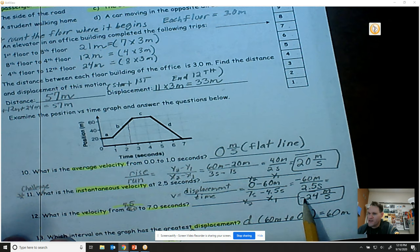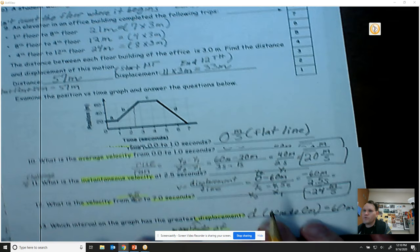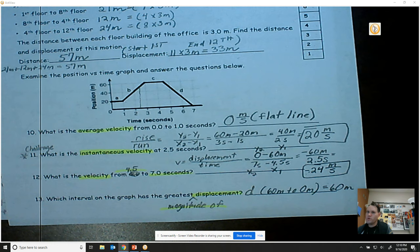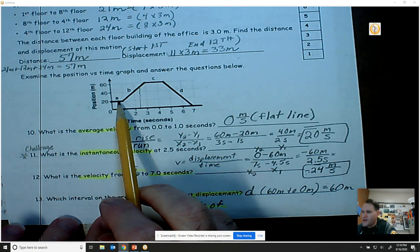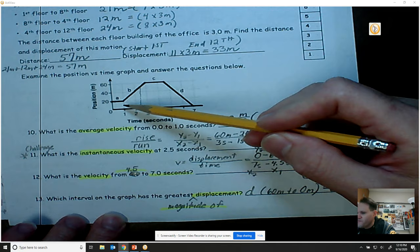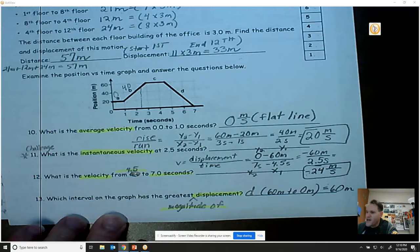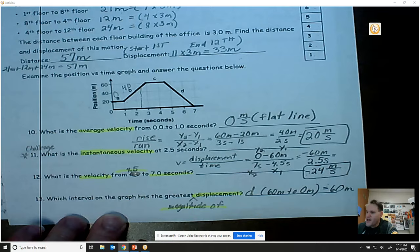All right, number 13. Which interval on the graph has the greatest magnitude of displacement? Which interval on the graph has the greatest magnitude of displacement? So you look at A. A is 0. And then you look at B. B is from 20 to 60. So that's going to be 40. So that's 0, that's 40. Well, look at C. C is flat, just like A. So it's going to be 0. Now look at D. D goes all the way from 60 all the way to 0. So you're going to look at all these four segments...